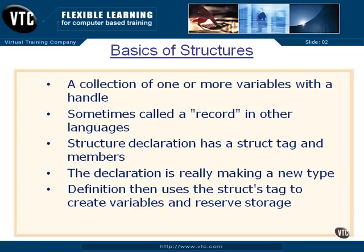A structure declaration has a struct tag and members. The tag is optional, but if you leave the tag off, you can't do anything else with that structure definition other than what you have right there at the beginning. The declaration of a struct is really making a new type of variable that we can then define wherever we need to. The definition uses the struct's tag to understand what kind of type we want to create, then makes up appropriate variables and reserves storage for the new type.